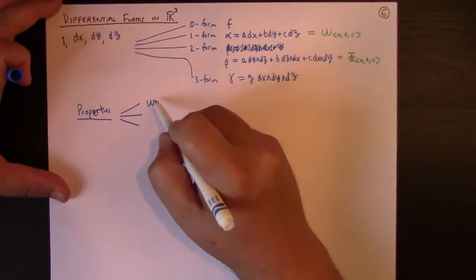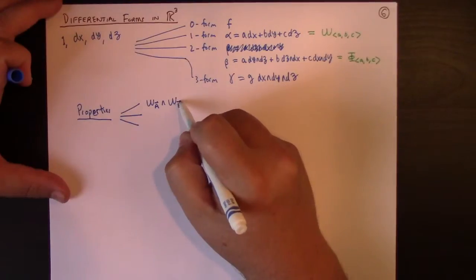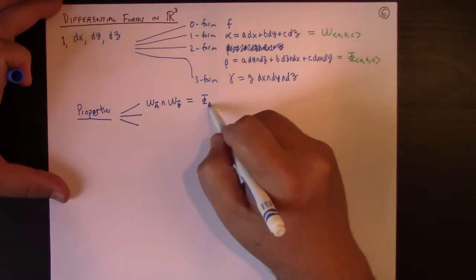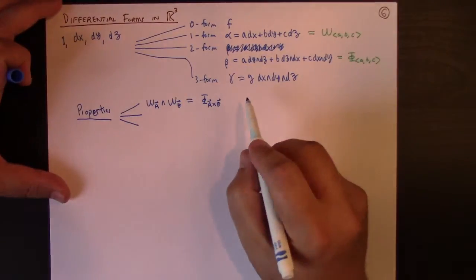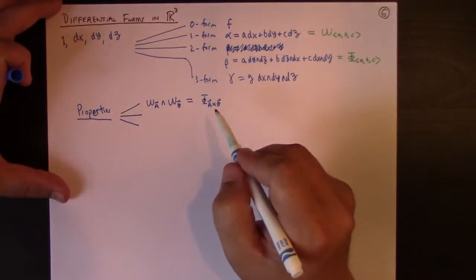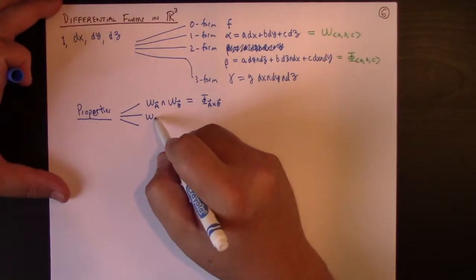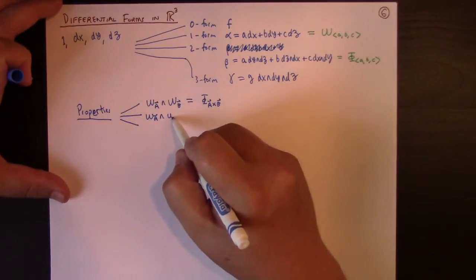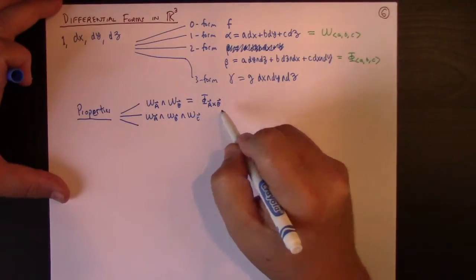First of all, if I have omega A wedged with omega B vectors, I actually get the flux form of A cross B. So, in this sense, the wedge product encodes the cross product.